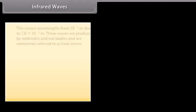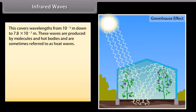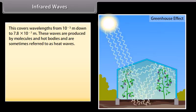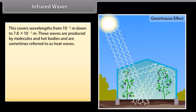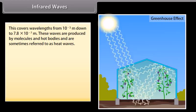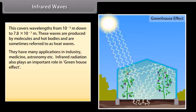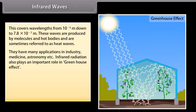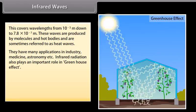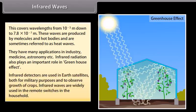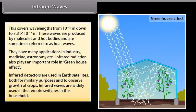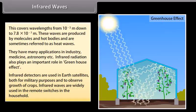Infrared waves. This covers wavelengths from 10 raised to the power minus 3 meter down to 7.8 into 10 raised to the power minus 7 meter. These waves are produced by molecules and hot bodies and are sometimes referred to as heat waves. They have many applications in industry, medicine, astronomy, etc. Infrared radiation also plays an important role in greenhouse effect. Infrared detectors are used in Earth satellites both for military purposes and to observe growth of crops. Infrared waves are widely used in the remote switches in the household.